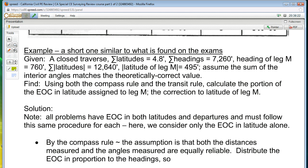So you're given a closed traverse. The latitude, sum of the latitudes going around the traverse is 4.8 feet. The sum of the headings, meaning leg distances, is 7260 feet. The heading of leg M is 760 feet. The sum of the absolute value of the latitudes is 12,640. Why would you ever need to know that? And then the absolute value of the latitude of that weird leg M is 495. Assume the sum of the interior angles matches the theoretically correct value. What that means is that the first step to balancing a traverse they've already done for you.